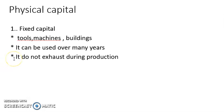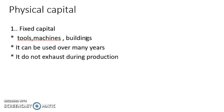Fixed capital includes tools, machines, buildings, etc. Tools can be used after one round of production again for another round of production. Machines, in the same way, after one round of production is completed, we can use those machines for another round. Same with buildings — we can produce many things in the same building.